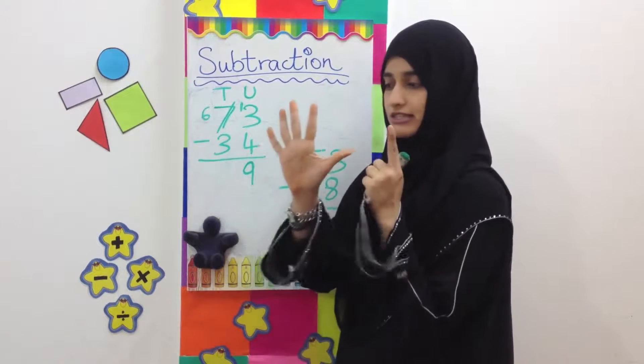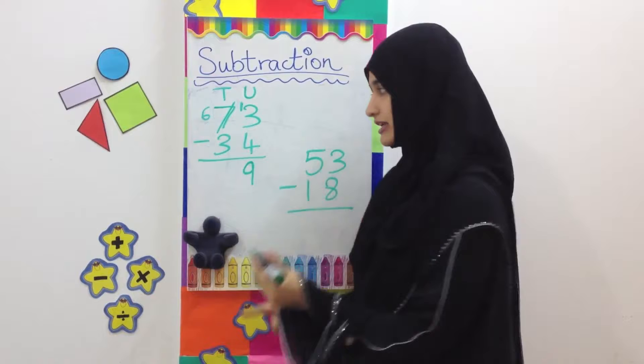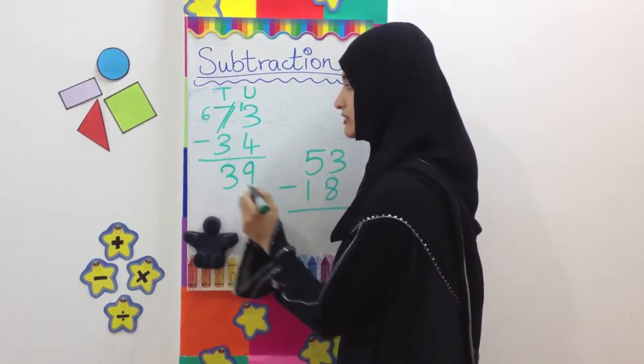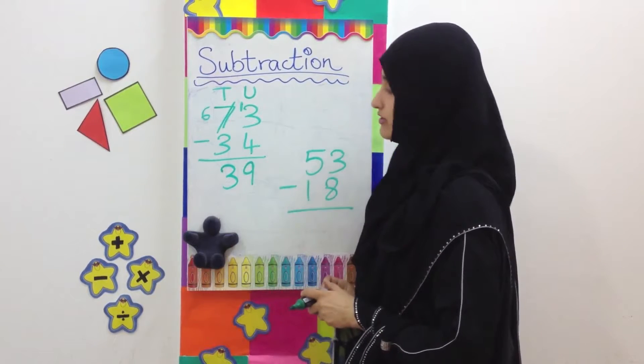6 minus 3. 6 take away 3. Answer is 3. You write it here. 73 minus 34 equals 39.